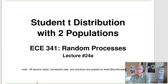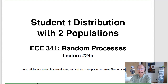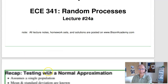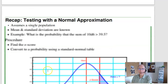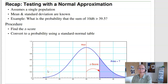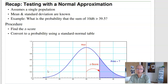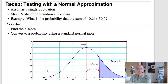Welcome to the first part of lecture number 24: Student t-distributions with two populations. As a recap, the basic assumption behind student t-distributions is that your data has a normal approximation and that there's a single population that you're dealing with.